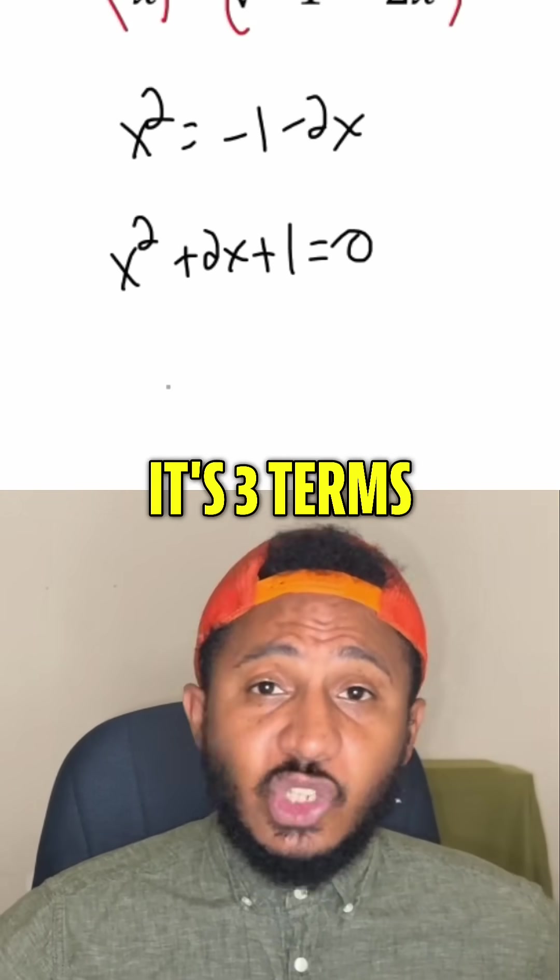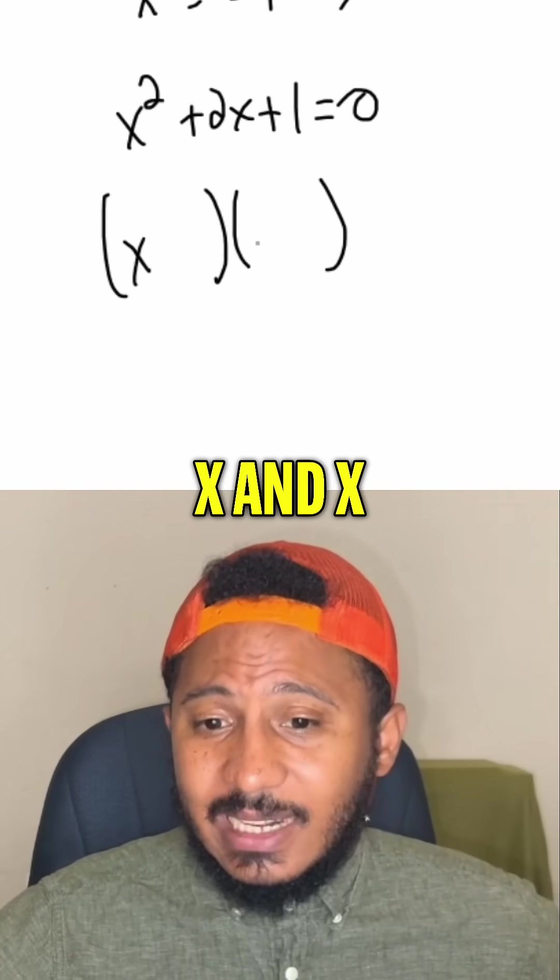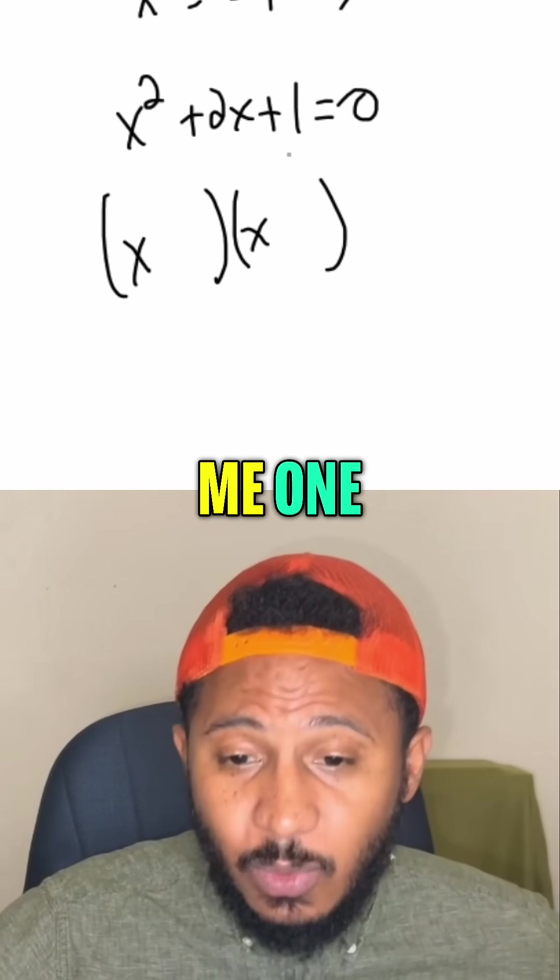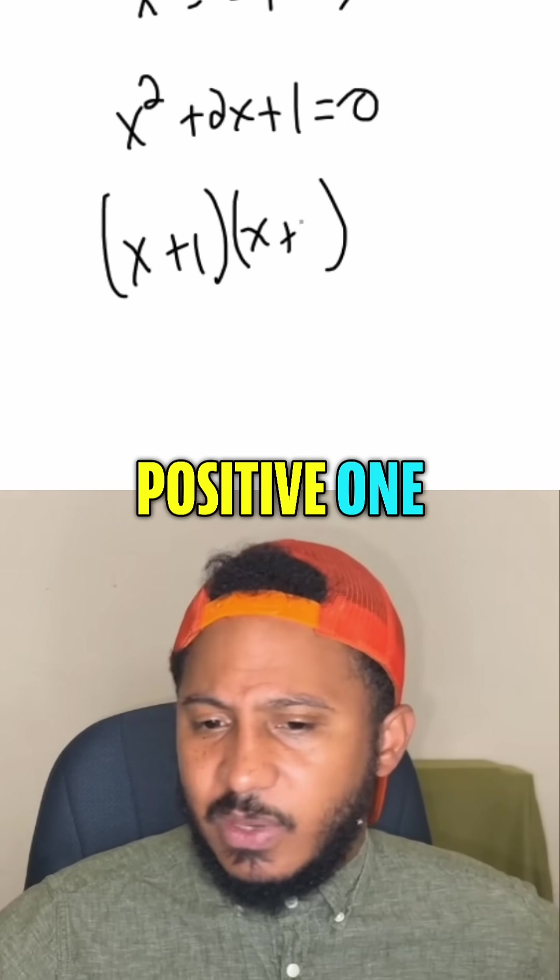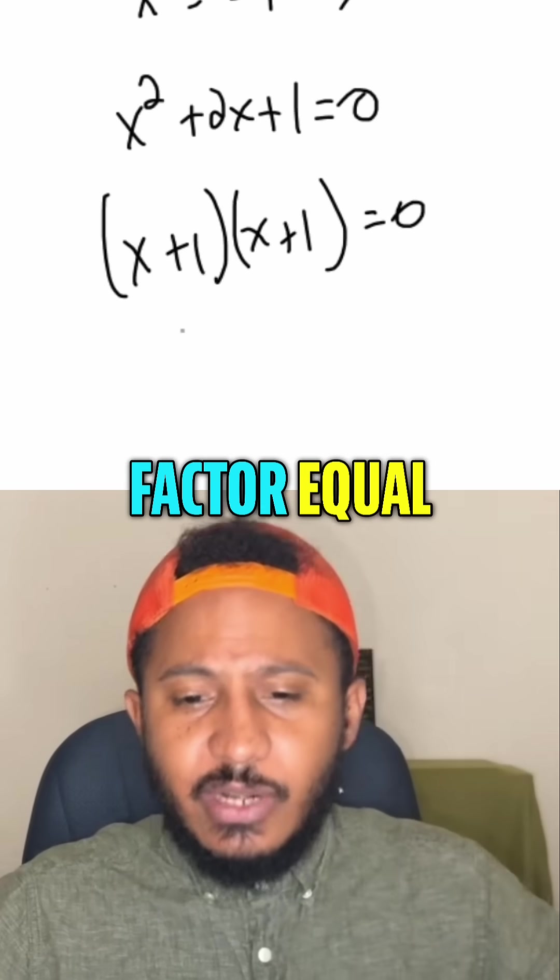And now we factor the other side. It's three terms and there's a one in front. So double bubble, x and x. And the numbers that multiply give me 1 and add to give me 2. So positive 1 and positive 1 work perfectly. So we got 0 on one side, we factor the other side, set each factor equal to 0.